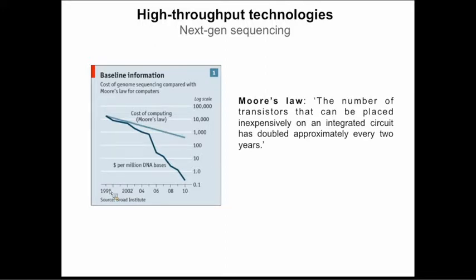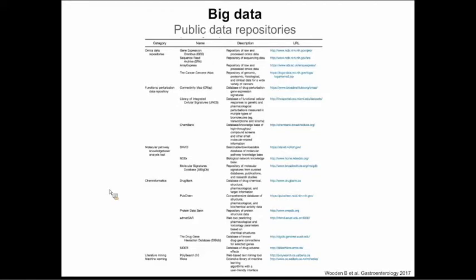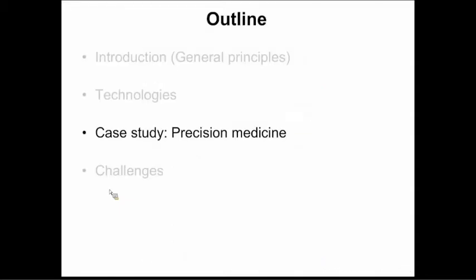Journals now require that when you publish original data using these technologies, you must deposit it in public repositories so everyone has access. There are different public repositories you can access and download data from. I think there are around 2 million exome sequences deposited in publicly available repositories, so everyone can download, mine, and reanalyze the data.